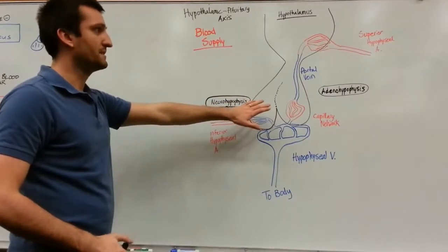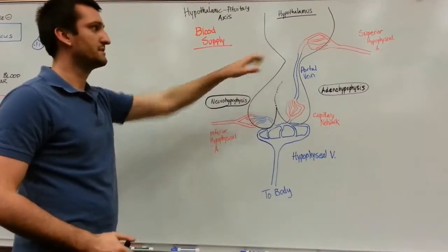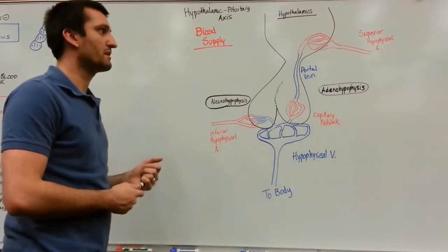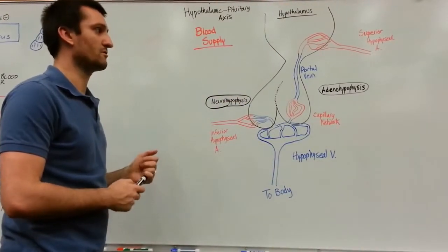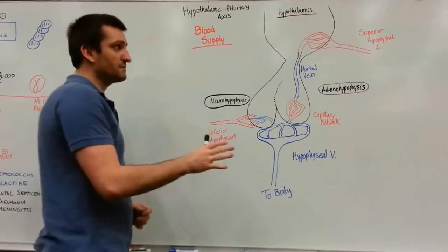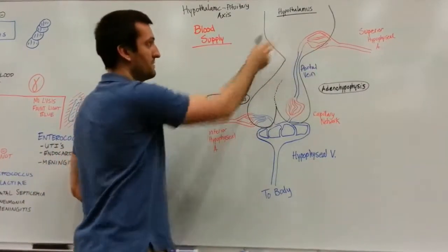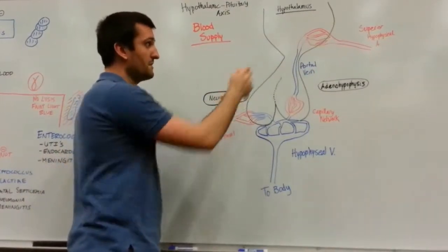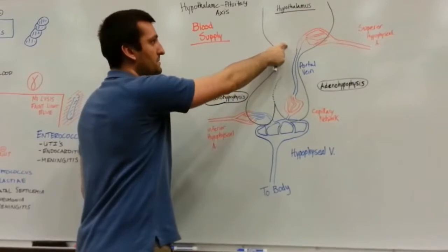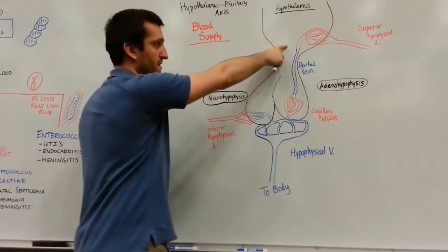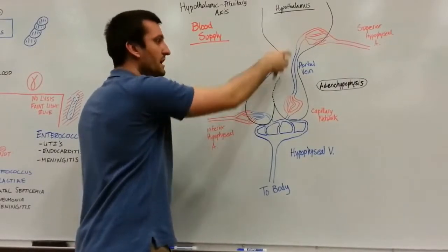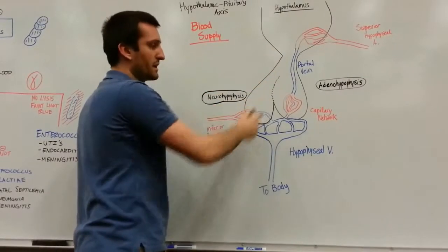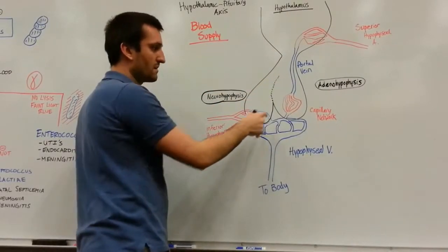The adenohypophysis is going to get its blood supply from the superior hypophyseal artery. But first, it's going to travel to the hypothalamus. From there, the hypothalamus will release its hormones into the portal vein, into a capillary network.